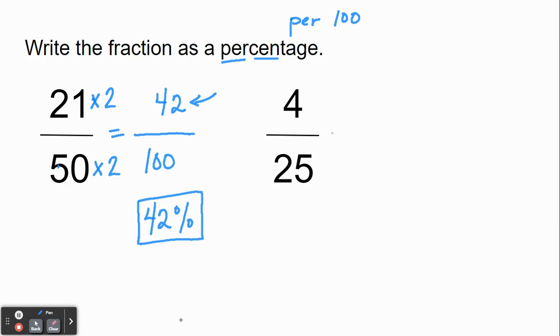4 25ths. If we want to do per 100, we would put 100 on the bottom and then ask ourselves, 25 times what gives us 100? That's 25 times 4. Whatever we do to the bottom of a fraction, we have to do to the top. So 4 times 4 would give me 16. And then remember that top number is your percentage.